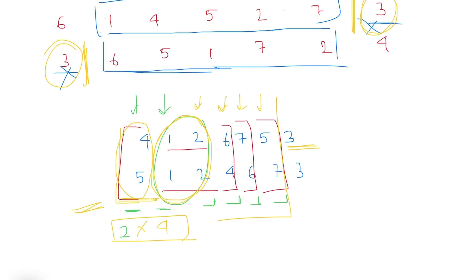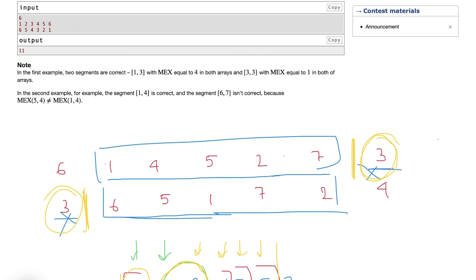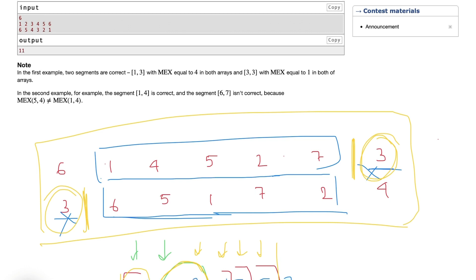We keep checking for all MEX values — 3, 4, 5, and so on up to n. For MEX equal to n+1 (for example, if n=7, then MEX equal to 8), this happens when we include the whole permutation, so l starts at the beginning and r ends at the end. That is also another valid pair, so we increment our result for that case.